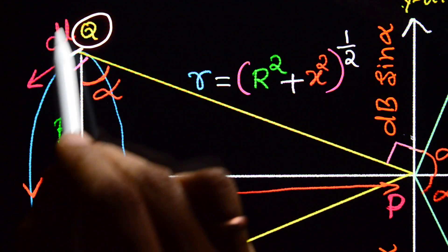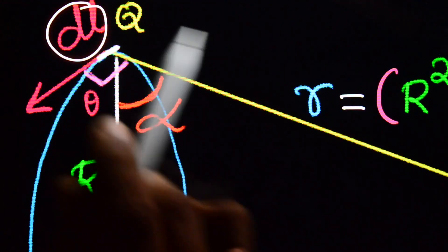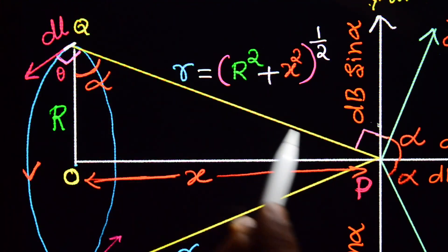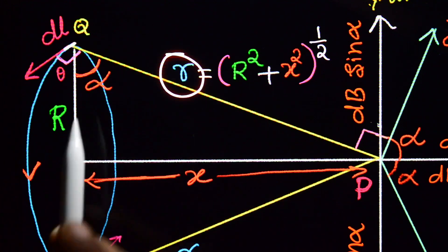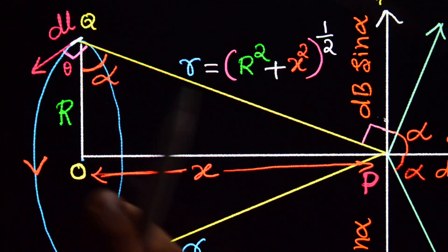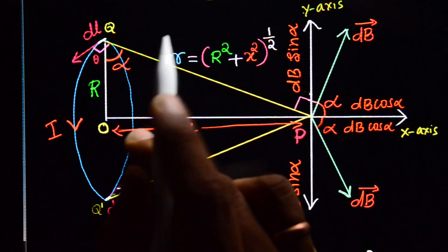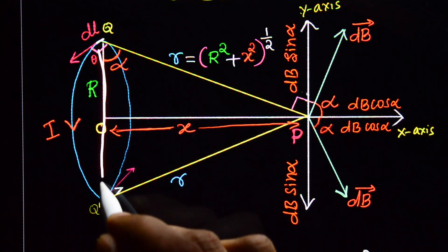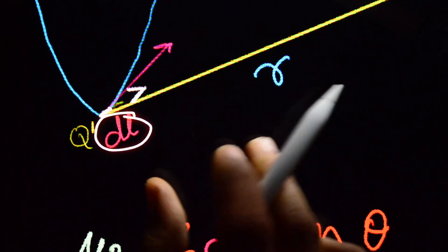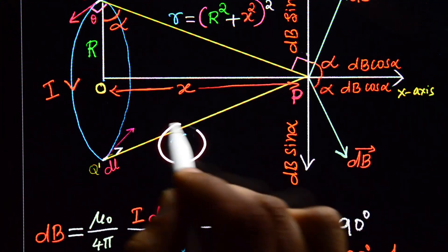To derive this expression we consider a current element Q of length DL. The distance between current element Q and point P is small r. We also consider another current element Q' which is diametrically opposite, also of length DL, and the distance between Q' and P is also r.